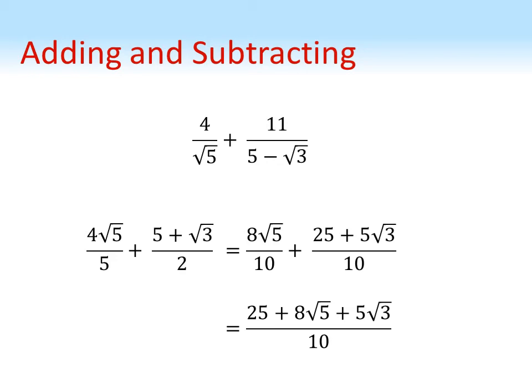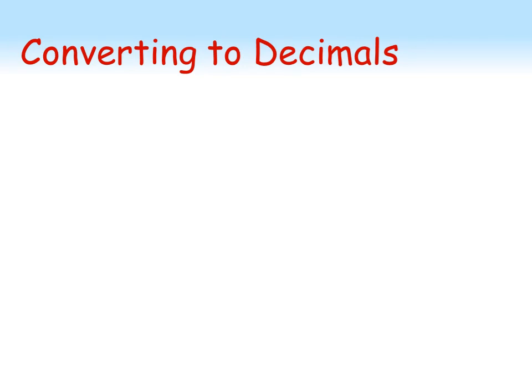It also makes it a lot easier to convert them to decimals. Let's take our example of 1 over root 2, which can also be written as root 2 over 2. Nowadays we can stick that into a calculator and get a decimal out nice and simply.